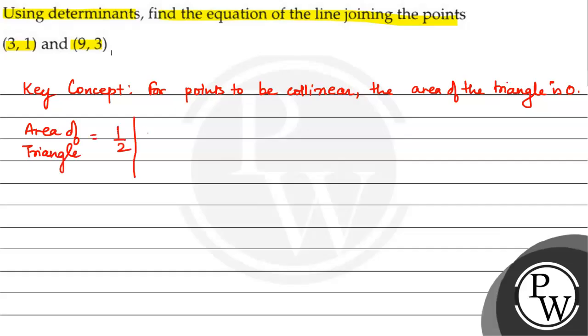Half multiplied by the determinant: x1, y1, 1; x2, y2, 1; and x3, y3, 1. If collinear, then this area is equal to 0.